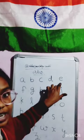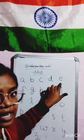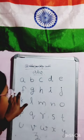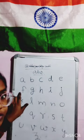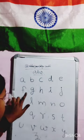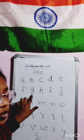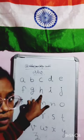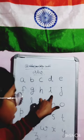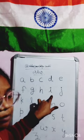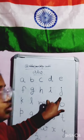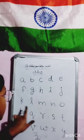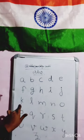E for Elephant, Elephant means Hathi. F for Fish, Fish means Machli. G for Grabs, Grabs means Angoor. H for Horse, Horse means Ghoda. I for Ice Cream. J for Joker.